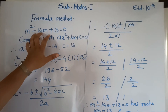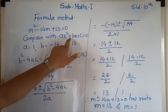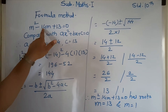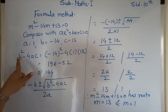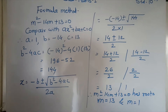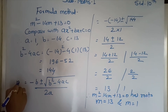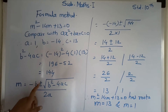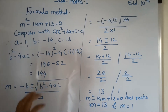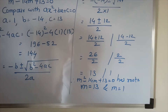Now, this equation is compared to the standard form ax square plus bx plus c equal to 0. So we have a equal to 1, b equal to minus 14, c equal to 13. This formula is used to find b square minus 4ac. Since the variable is m, we write m is equal to minus b plus minus under root of b square minus 4ac upon 2a. Putting in the values gives two roots: m equal to 13 and m equal to 1.